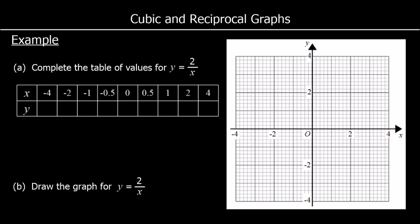In this video we're looking at cubic and reciprocal graphs. We're starting with reciprocal graphs — these are graphs of something over x, so it could be y equals 1 over x, y equals 2 over x, y equals 3 over x, and so on. We're going to draw the graphs and then see what kind of shape they take.